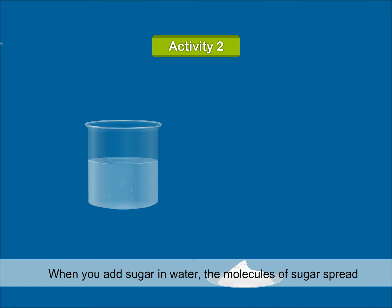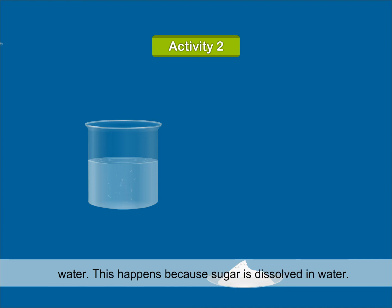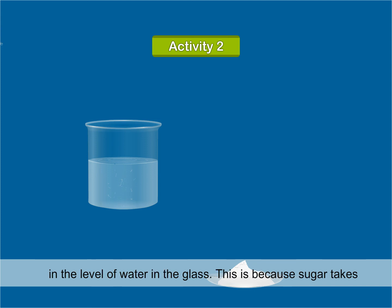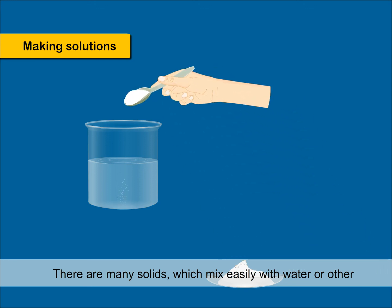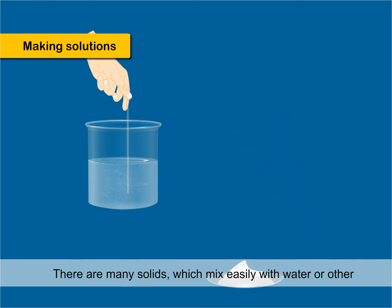How does this happen? When you add sugar in water, the molecules of sugar spread in water. They take the space in between the molecules of water. This happens because sugar is dissolved in water. Initially, when you added sugar in water, there was no change in the level of water in the glass. This is because sugar takes up very little space — the molecules of sugar take only the empty space in between the water molecules.